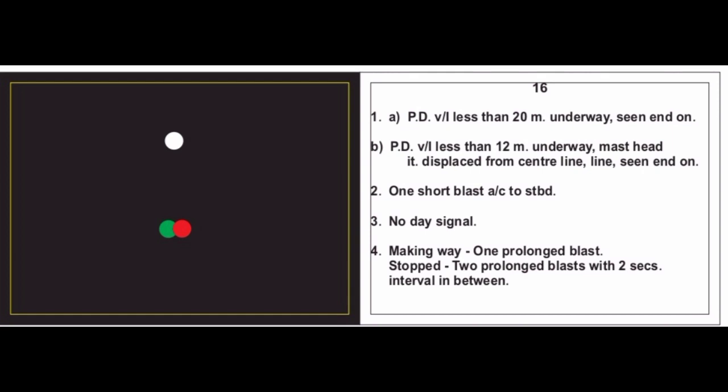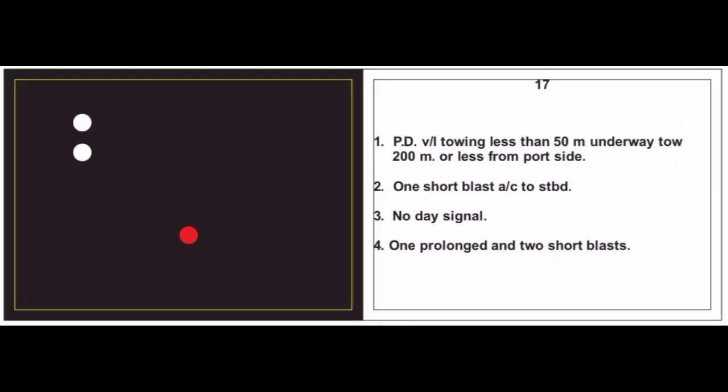Card 16: A power driven vessel — since sidelights are combined in a single lantern, the vessel is definitely less than 20 meters, underway, seen end-on. Second case may be a power driven vessel less than 12 meters underway with masthead light displaced from centerline, seen end-on. Action: one short blast, alter course to starboard. No day signal. Sound signal: making way — one prolonged blast; stopped — two prolonged blasts with two-second interval.